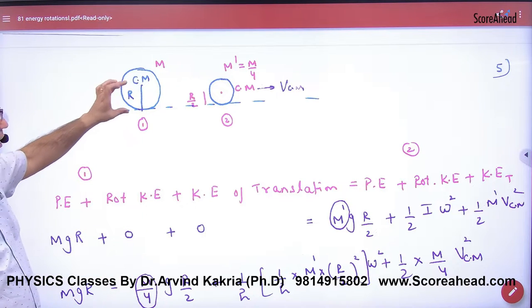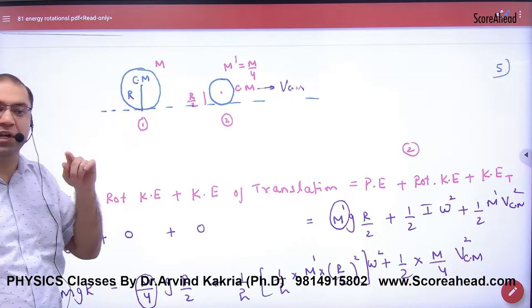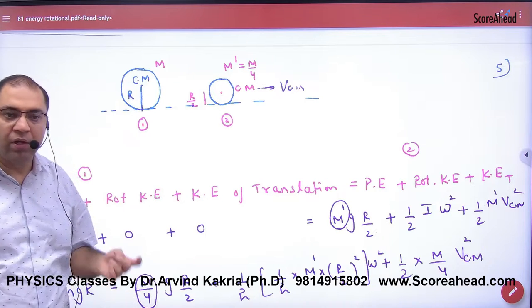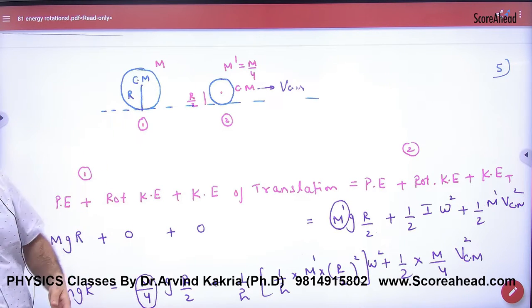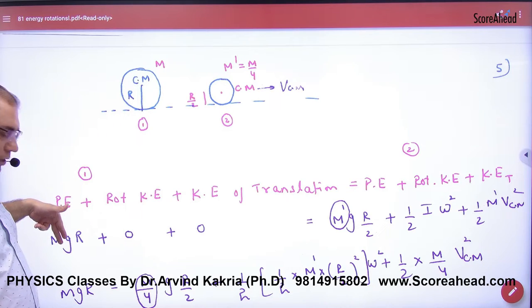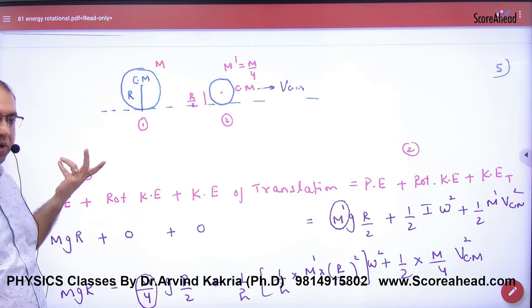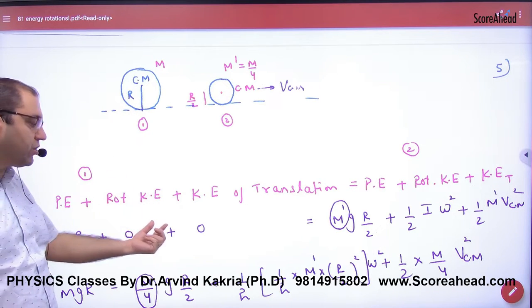So what will be the potential at this point? MgR, because the center of mass is at height R. The M is at center of mass, so the potential energy is MgR. Kinetic here? Zero. Rotation here is initially zero. So the two kinetic energies are zero.